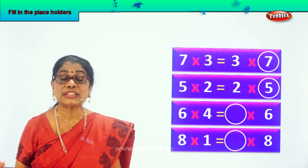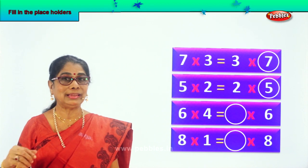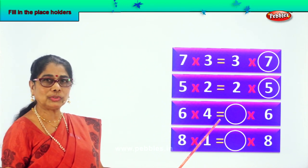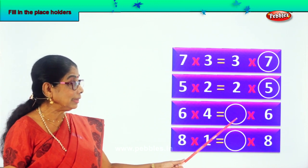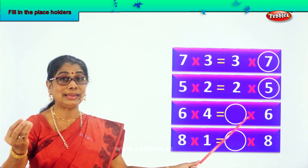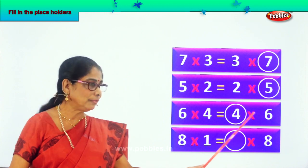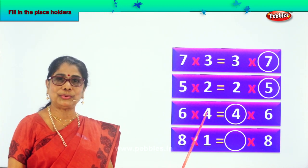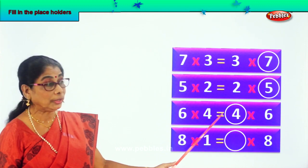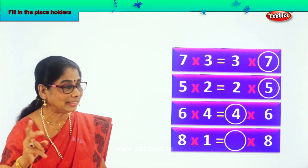6 into 4. 6 fours are 24. Now we have to get the same answer on the other side. 6 fours are 24 is also equal to dash into 6. Something into 6 must give you 24. That number definitely has to be 4. 4 sixes are 24. 6 fours are 24. So 6 into 4 is also equal to 4 into 6. The numbers are only reversed.